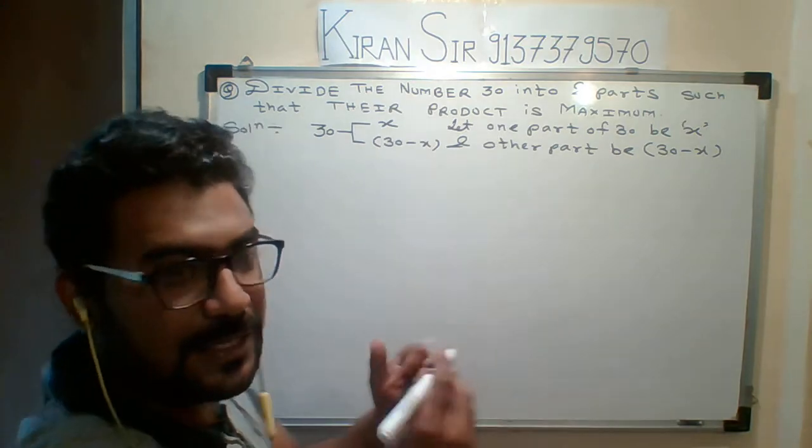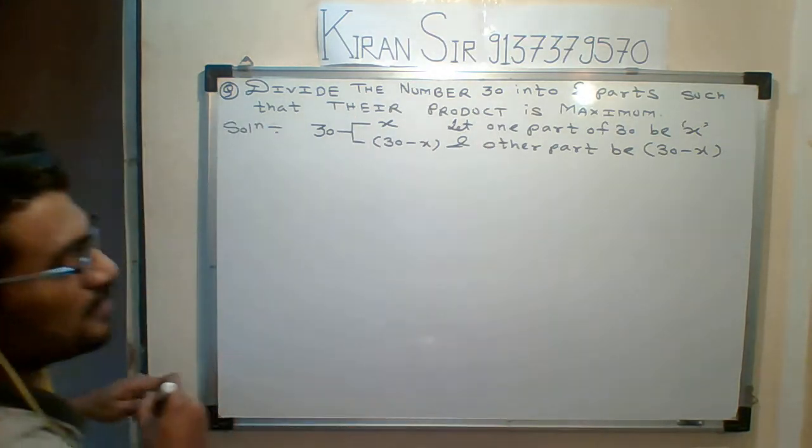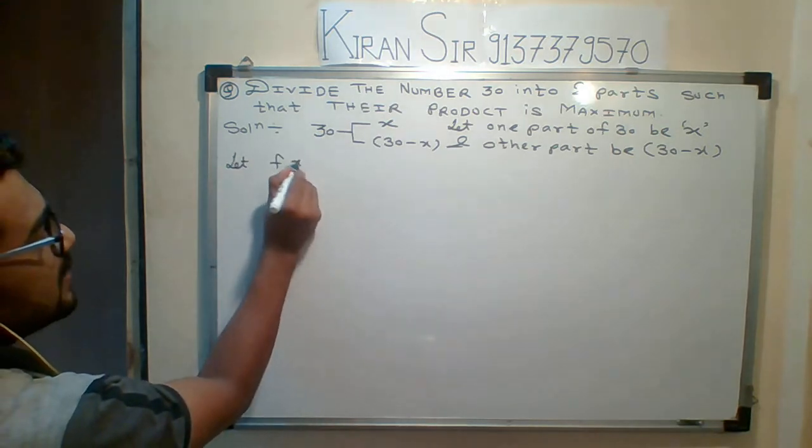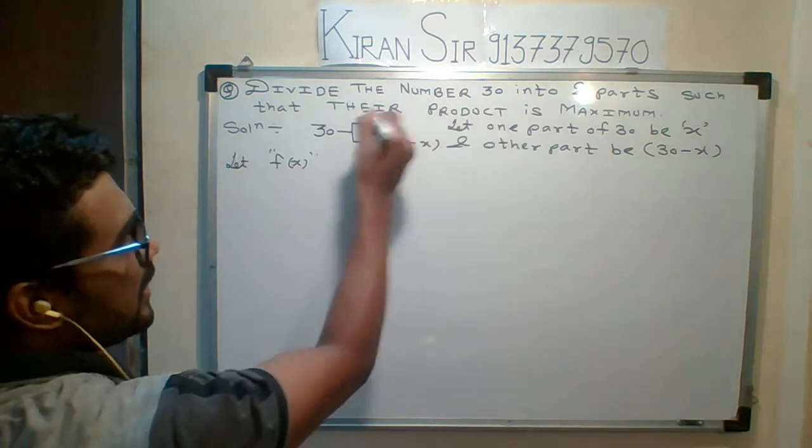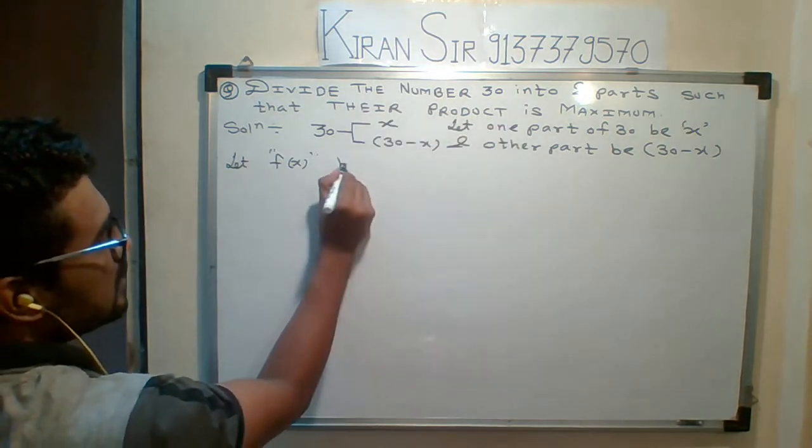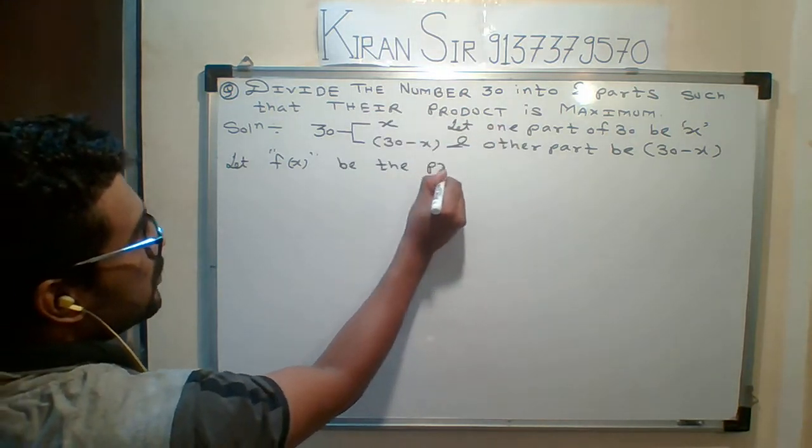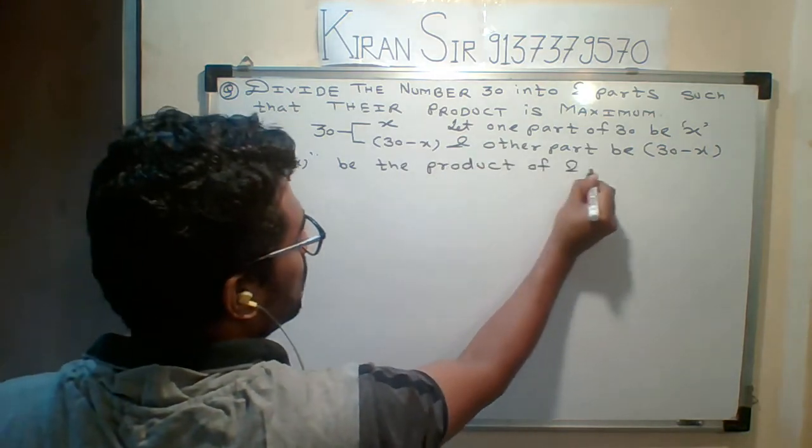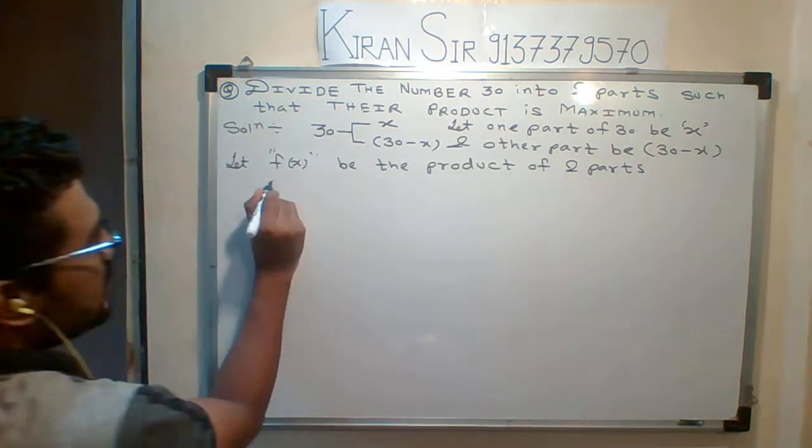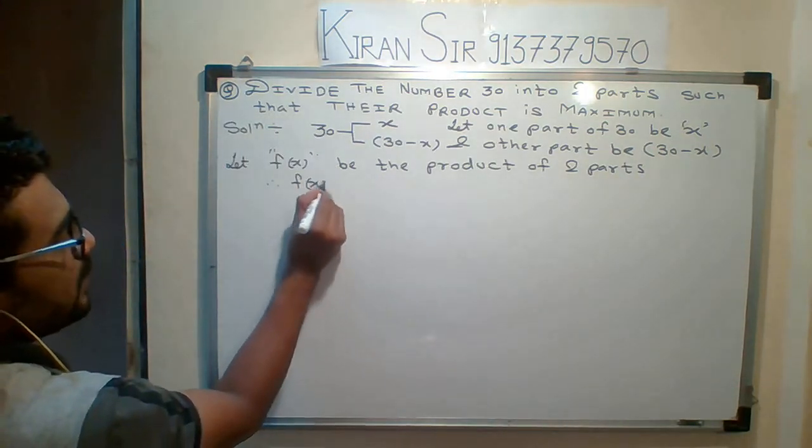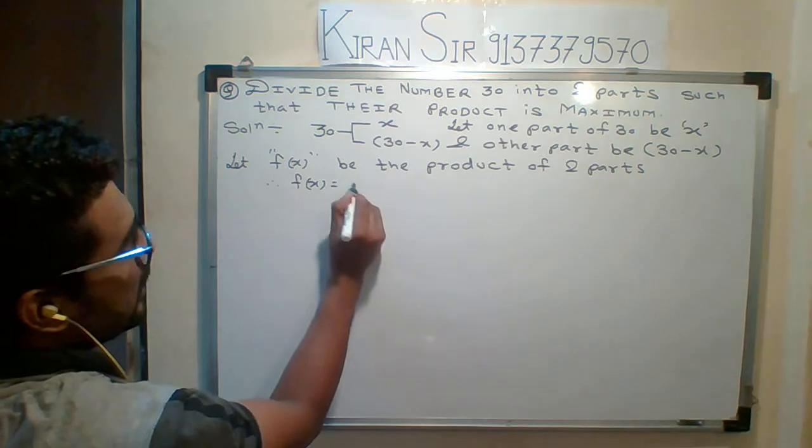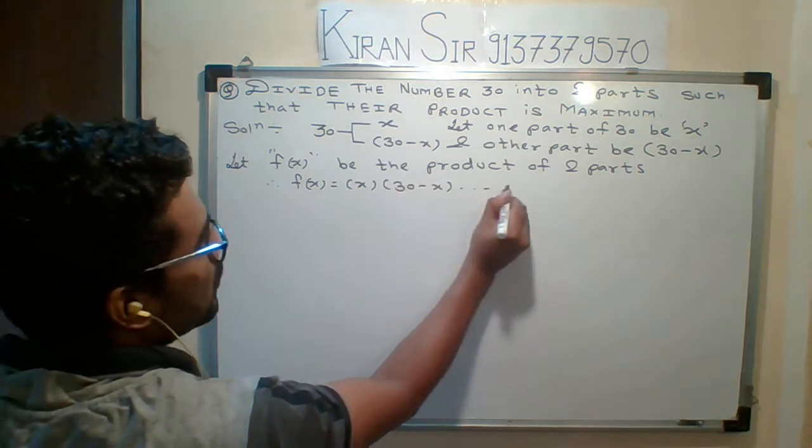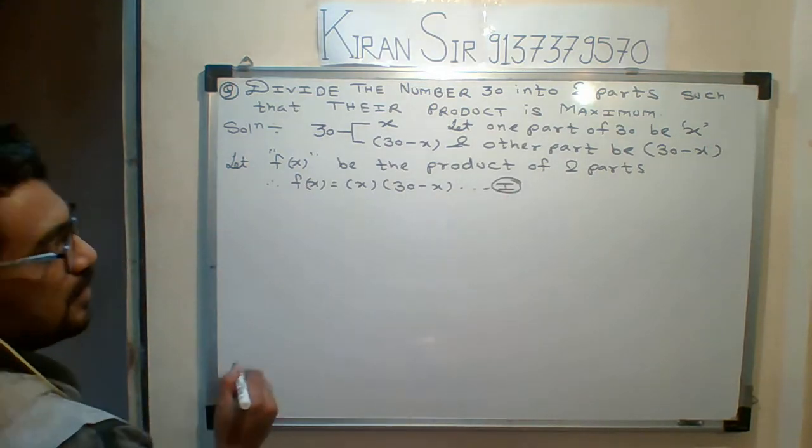Now what is the second capital part? Their product. So we will say let f(x) be the product of two parts, product of those two parts which I have done. What is the product of x? This is equation number one, understood students.